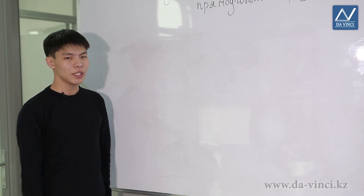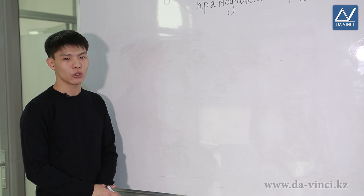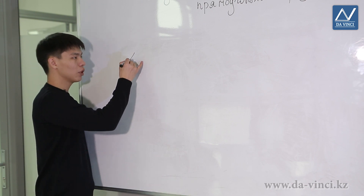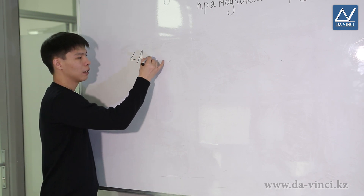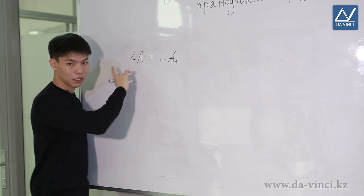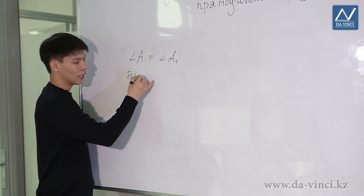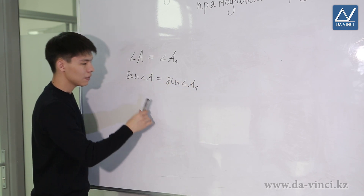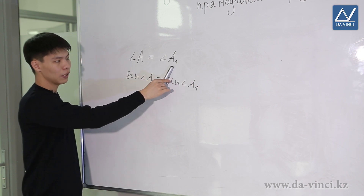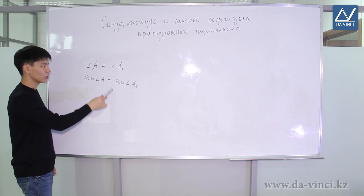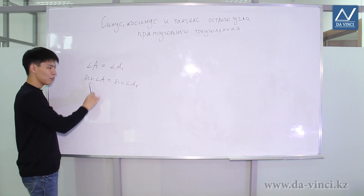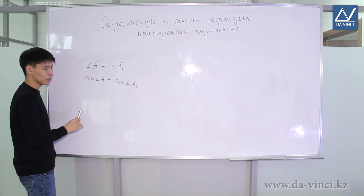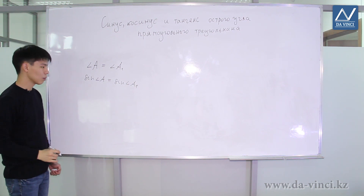Before we start solving problems, I would like to note the following: the value of the sine, cosine and tangent depends only on the angle and doesn't depend on what triangle it belongs to. For example, if angle A is equal to angle A1 in two right triangles, despite the fact that these triangles are different, the sine of angle A will be equal to the sine of angle A1. This can be proved easily: if two triangles have the same angles, then they are similar, and the corresponding ratios hold — so sine equals sine, cosine equals cosine, and tangent equals tangent.